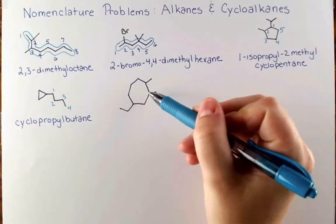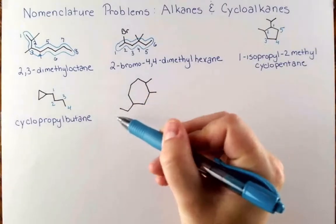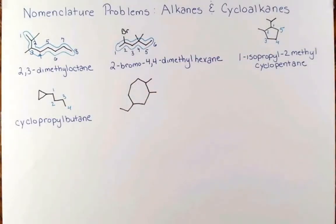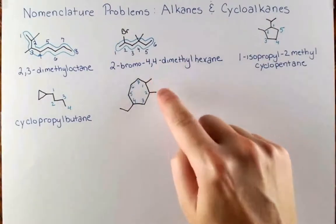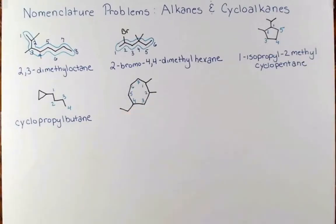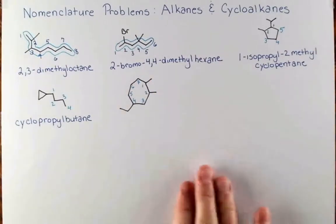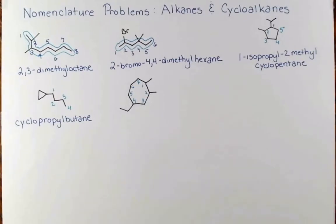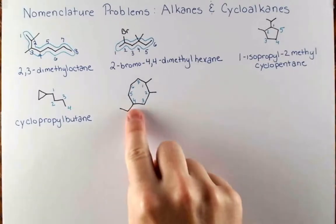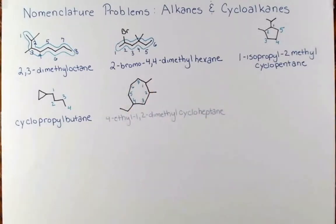If we went in the other direction, we wouldn't reach the second substituent until position 6, so the correct direction gives us a 1,2-dimethyl and a 4-ethyl. Now we need to think about what order to place these in the prefix. It might be tempting to put dimethyl first because 'D' comes before 'E', but remember we ignore multiplying prefixes — we alphabetize by the base name, 'methyl' starting with 'M'. So 4-ethyl leads the prefix. The name of this compound is 4-ethyl-1,2-dimethylcycloheptane.